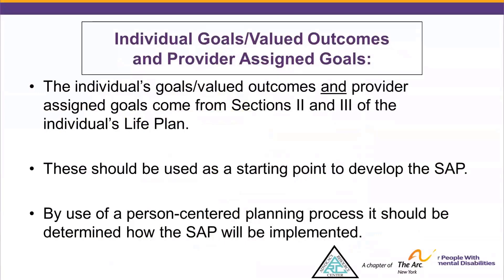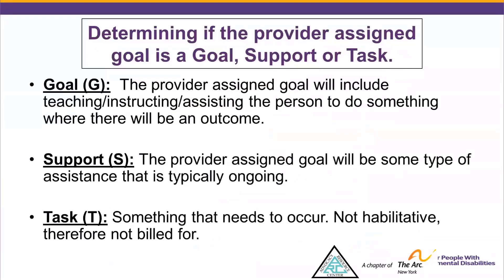The Individual Goals or Valued Outcomes and Provider Assigned Goals are also on the Staff Action Plan, and these come from Sections 2 and 3 of the Individual's Life Plan. These will be used as a starting point to develop the Staff Action Plan, and by use of a person-centered planning process, it should be determined how the Staff Action Plan will be implemented. During that process, you're talking about what types of things will be listed in the Staff Action section so everyone is on the same page.